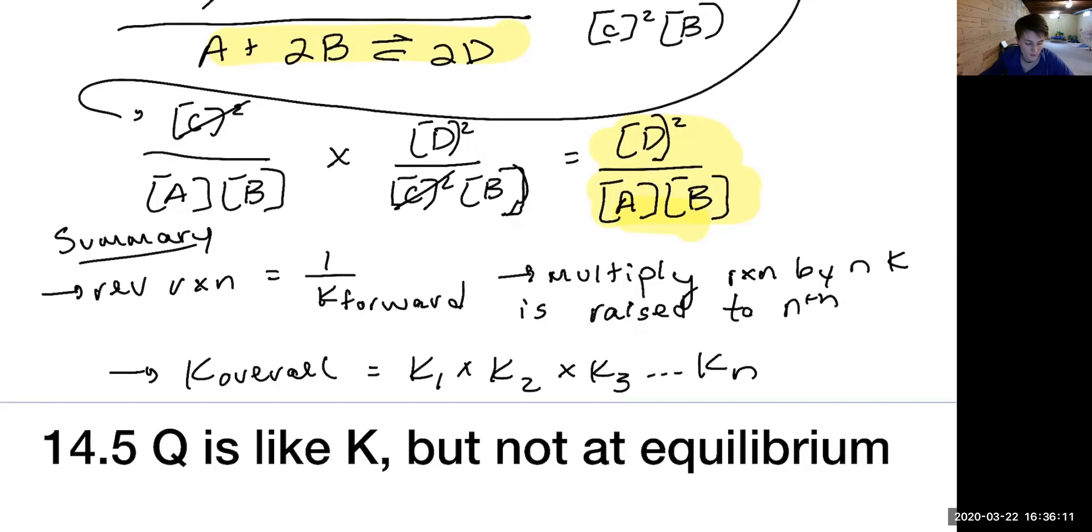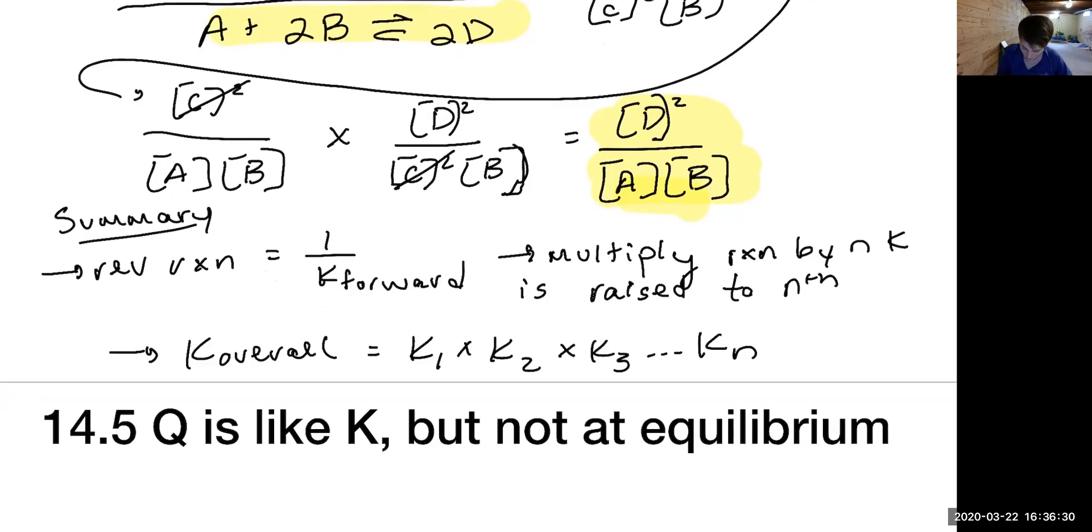Just so you do know, you also have a top hat question now about manipulating K. Your exact question is if I have K for the forward reaction, how can I get K for the reverse reaction? You should be able to answer that based on what you just did. That is it for this video. We are done. Bye everyone.